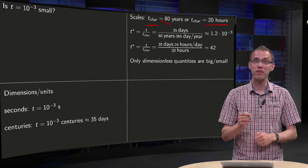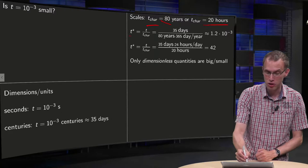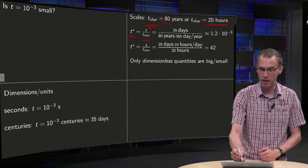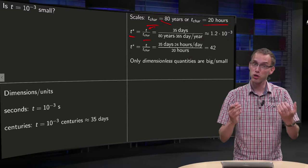In order to do that, you introduce the dimensionless time, t star, which is the time with dimensions divided by the characteristic time you have chosen.